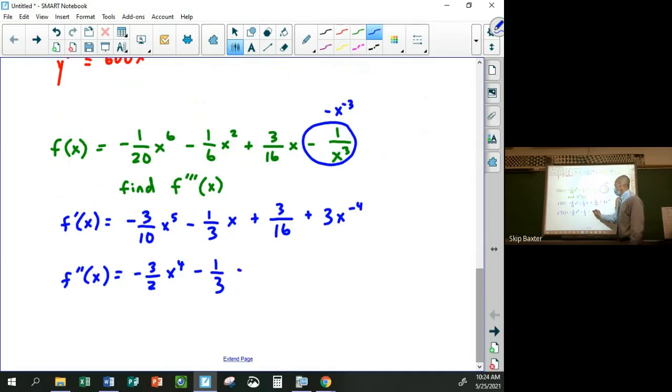This whole thing is just going to go to 0. Minus 12x to the negative 5. And then the third derivative, which is what I'm trying to find,